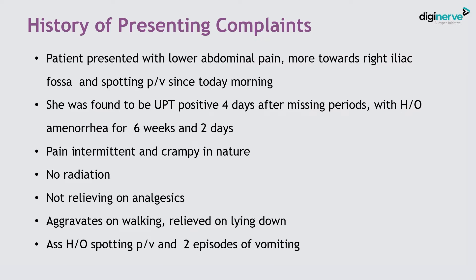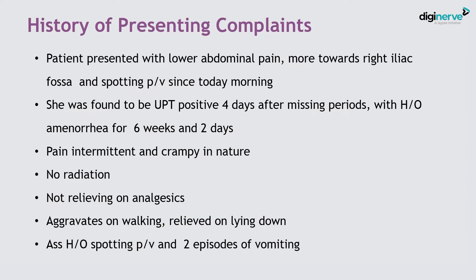Patient presented with lower abdominal pain, more towards the right iliac fossa, and spotting PV since today morning. She was found to be UPT positive 4 days after missing her period, with a history of amenorrhea for 6 weeks and 2 days. Pain is intermittent and crampy in nature, no radiation, not relieved on analgesics, aggravated on walking, relieved on lying down, associated with spotting PV and 2 episodes of vomiting.